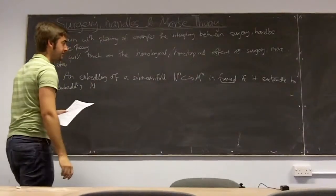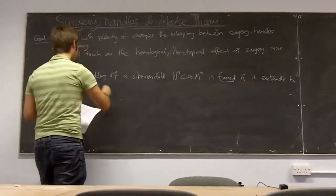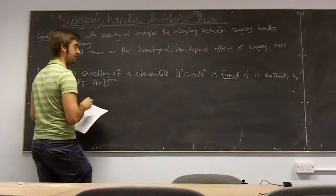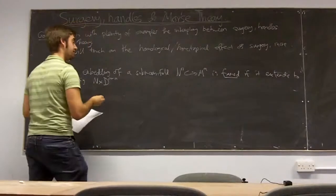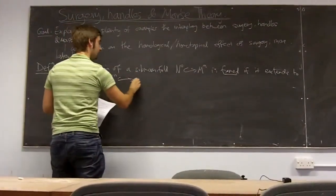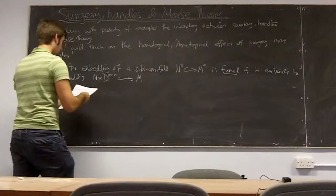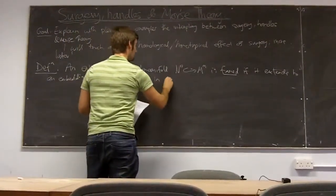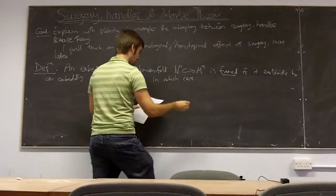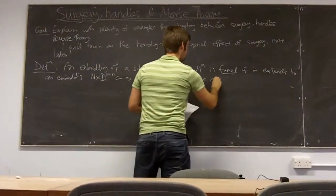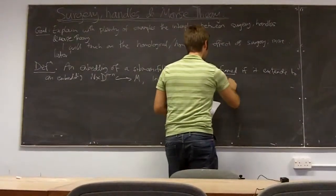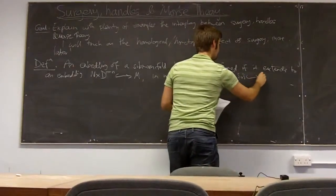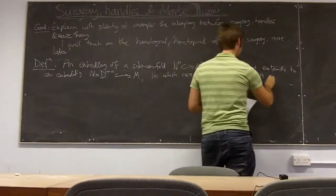It's framed if you can extend it to an embedding of N cross disk of dimension n minus n, up to the full dimension of the ambient manifold M. In this case, we call the original embedding N cross 0 into M the core of the embedding.